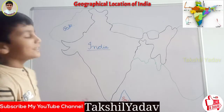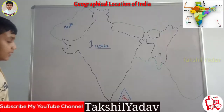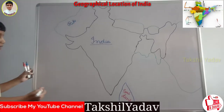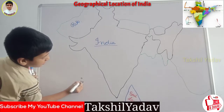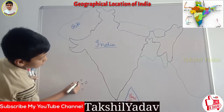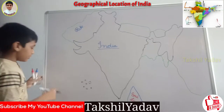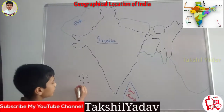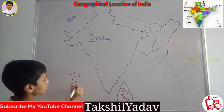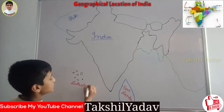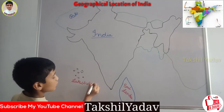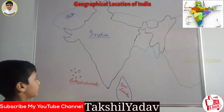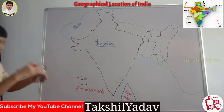Now we have our islands. On the south west side we have Lakshadweep Islands. It is a smaller group of islands and it is present on the south west side.